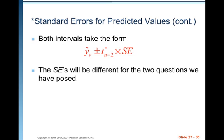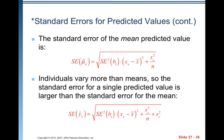Both intervals take the form y-hat plus or minus t-star with n minus 2 degrees of freedom times the standard error. The standard errors will be different for the two questions. The standard error of the mean predicted value equals the square root of SE-squared of b1 times (xv minus x-bar) squared, plus the standard error of the residual squared divided by n. Individuals vary more than means, so the standard error for a single predicted value is larger than the standard error for the mean.